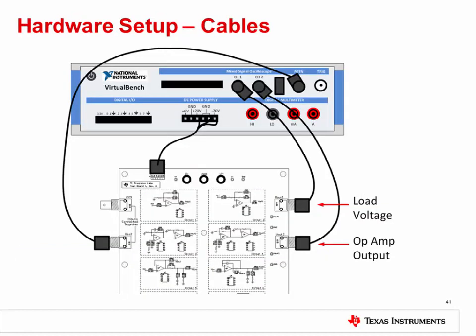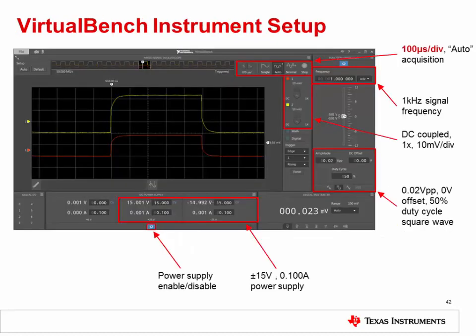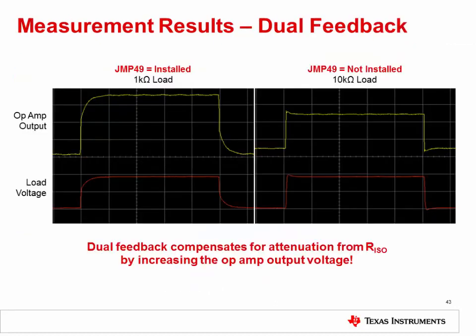The cable connections are the same as in experiment two. Do not make any changes to the cables. The VirtualBench setup is almost the same as before. Only change the time scale to 100 microseconds per division. All other settings should remain the same. You should see results similar to this. As you can see, the load voltage remains accurate even with changing load due to the compensation provided by the dual feedback network. The unloaded op amp output voltage must increase as the load resistance decreases to minimize the output voltage divider effect.